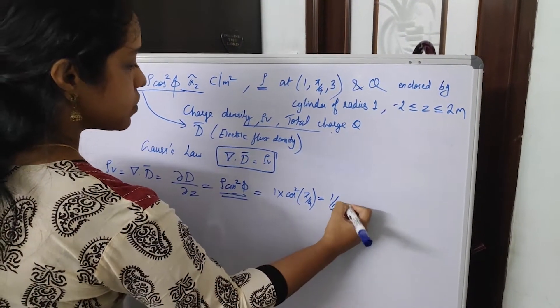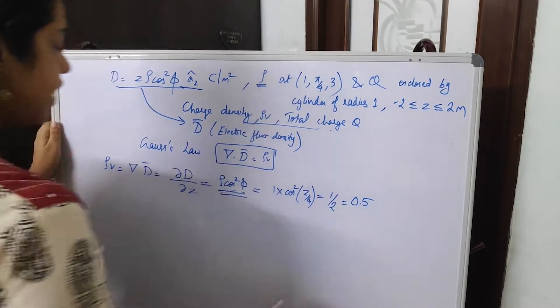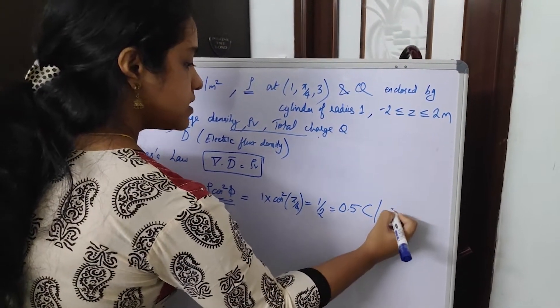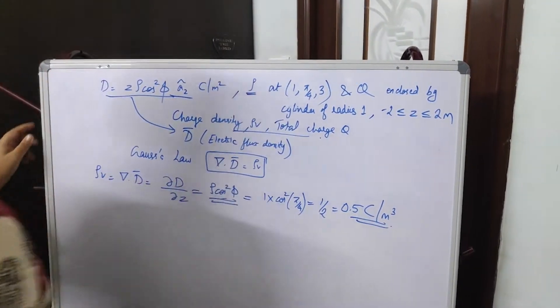So square, you get 1 by 2. This will be 0.5, and unit will be charge density, that is coulomb per meter cube. This is the value.